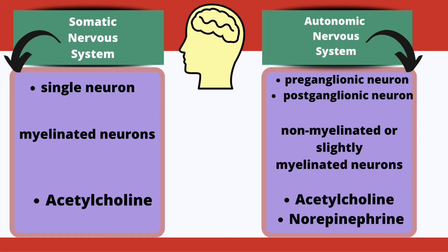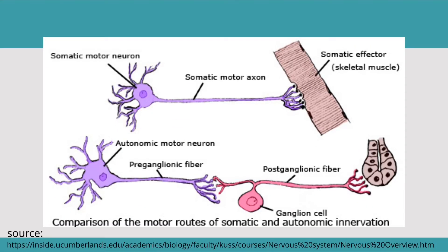The neurotransmitter involved in the somatic nervous system is acetylcholine, whereas in the autonomic nervous system it can be acetylcholine or norepinephrine. In the somatic nervous system, acetylcholine is responsible for signal transduction — the transfer of signals or responses from the neuron end to the effector organ. In the autonomic nervous system, the response is carried from neuron to neuron or neuron to effector organ through neurotransmitters that are acetylcholine or norepinephrine. The somatic motor neuron directly conveys the signal to the skeletal muscle or somatic effector.